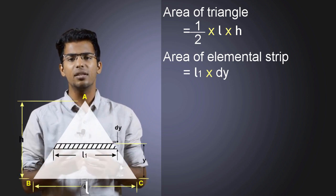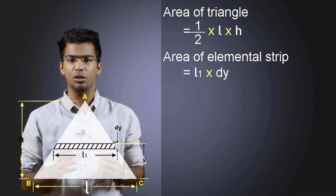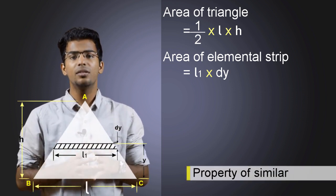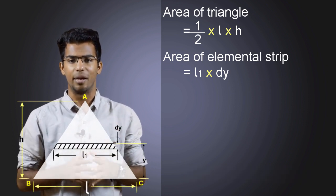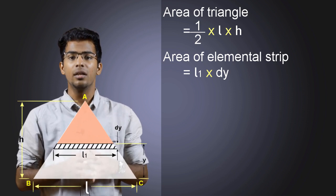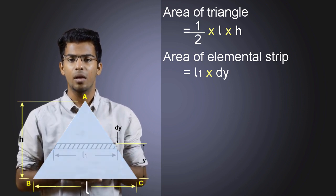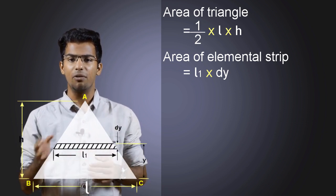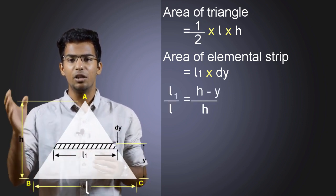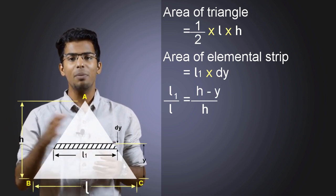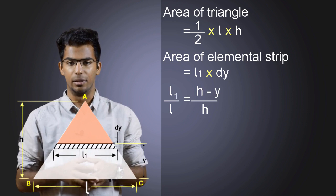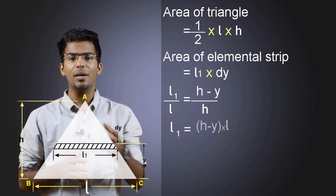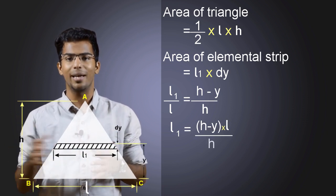We can replace L1 using the property of similar triangles. There are two triangles in this diagram: the upper small triangle and the complete triangle. By the property of similar triangles, we have L1 divided by L equals H minus Y divided by H, where H minus Y is the height of the upper triangle. By simplifying, L1 will be (H minus Y) times L divided by H.